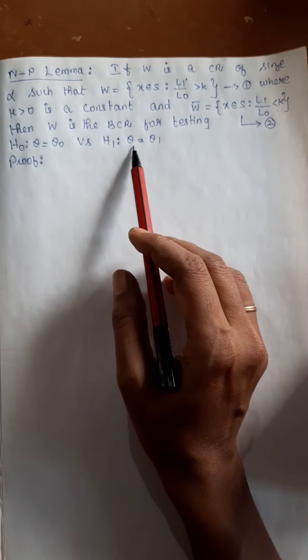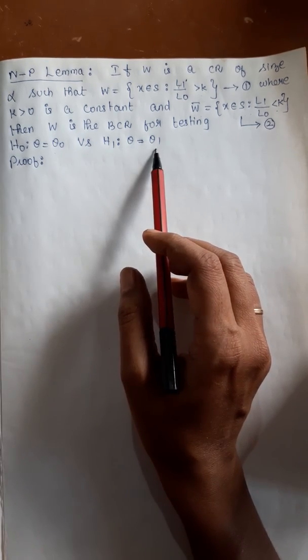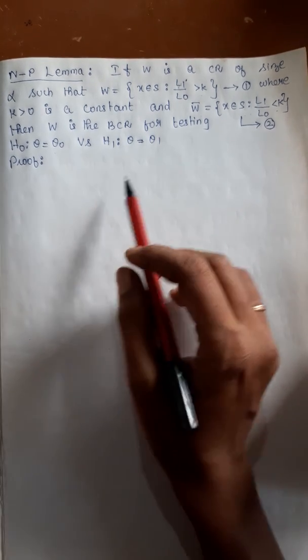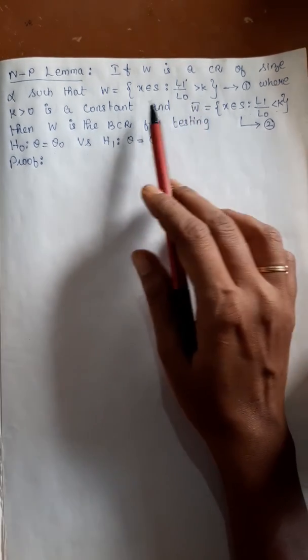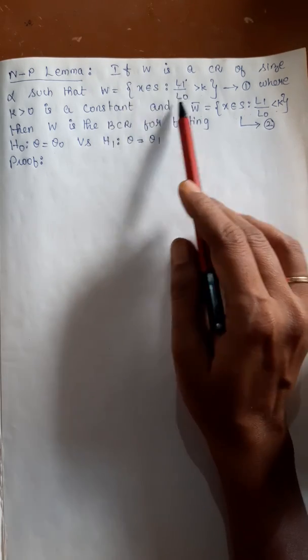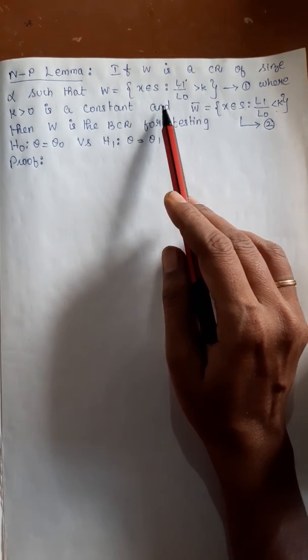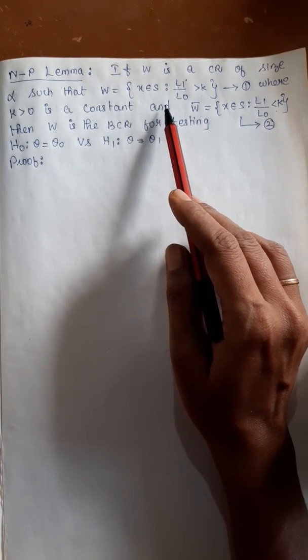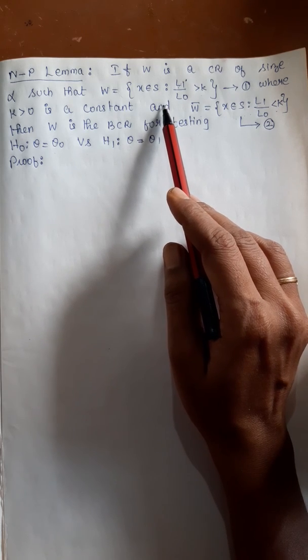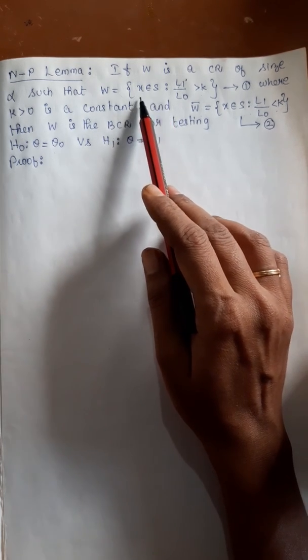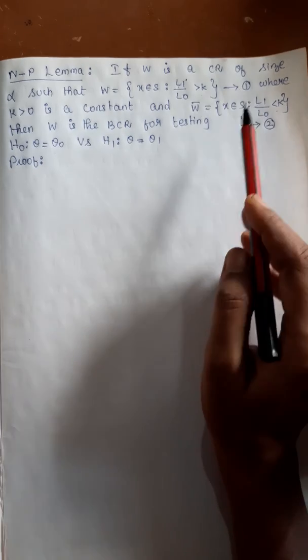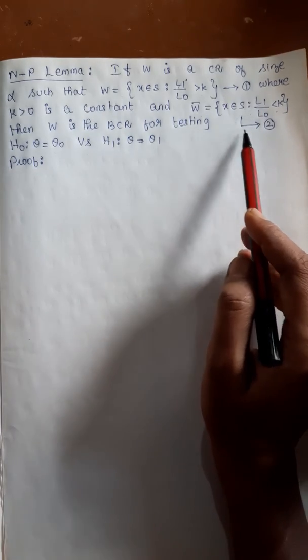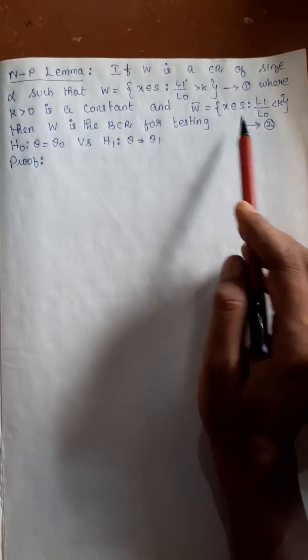This w is the best critical region for testing a simple hypothesis theta equal to theta0 against a simple alternative hypothesis theta equal to theta1. If w is framed like this, this w will be the best critical region — that is what we have to prove. I am numbering this as equation 1 and this as equation 2.